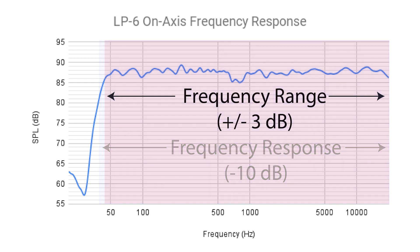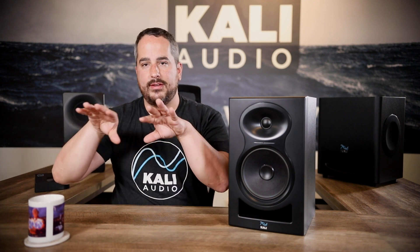Frequency range at plus or minus 3 dB basically means that from this frequency to this frequency, all of the frequencies that the loudspeaker reproduces are roughly equal in loudness. So whether that's the low end, the midrange, or the high frequency, everything is more or less even — plus or minus 3 dB is generally agreed to be a good figure for that.